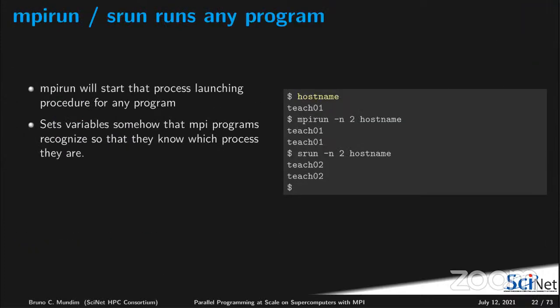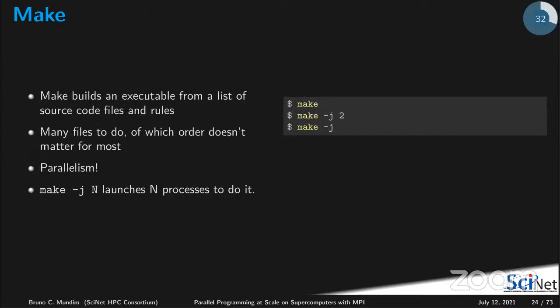An analogy a colleague of mine came up with: srun or mpirun is like installing telephone lines in your house. Each house is a computer node where an MPI task will run. Setting up the lines and giving you the number is basically what MPI does — it gives each telephone a number, and it knows how many houses there are in your neighborhood.